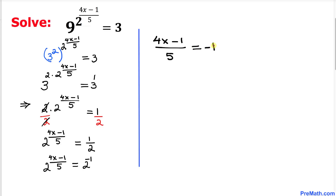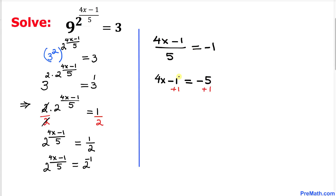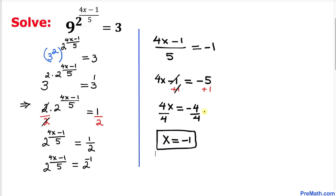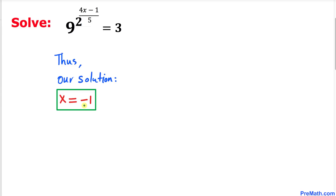Negative 1 can be written as negative 1 over 1. Now we cross-multiply, giving us 4x minus 1 equals negative 5. Adding 1 to both sides, we get 4x equals negative 4. Dividing both sides by 4, x turns out to be negative 1 as our solution.